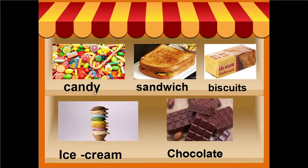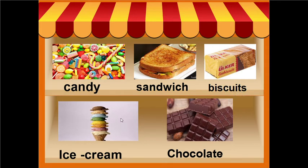Candy — C-A-N-D-Y — candy. Here we have sandwich — S-A-N-D-W-I-C-H — sandwich. Here we have biscuits — B-I-S-C-U-I-T-S — biscuits. Here we have ice cream — I-C-E C-R-E-A-M — ice cream. And last picture, here we have chocolate — C-H-O-C-O-L-A-T-E — chocolate.